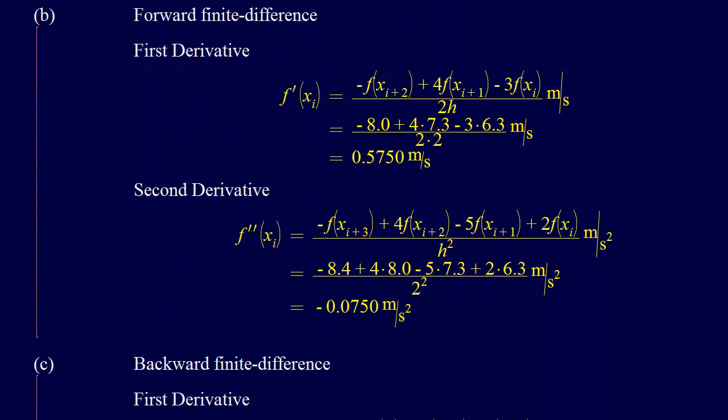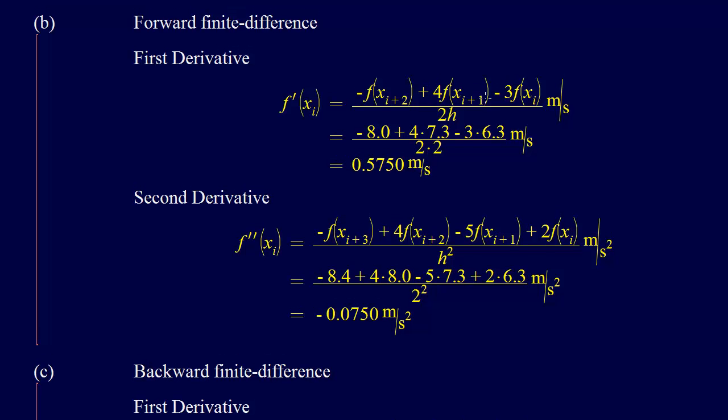Then we can move on to the forward finite divided difference. For the first derivative formula that's accurate to order h squared, which is what they're looking for, this is figure 23.1. We see that we actually have to include more points. We have minus f at xi plus 2, plus 4f at xi plus 1, minus 3f at xi. Whereas before we only had to use 2 points, now we have to use 3 points to get the same accuracy, all divided by 2h. So that'll be minus 8.0 plus 4 times 7.3 minus 3 times 6.3.